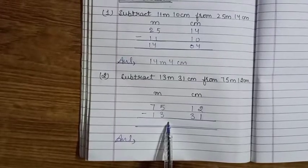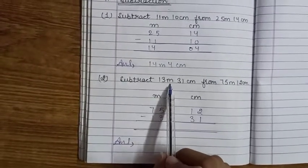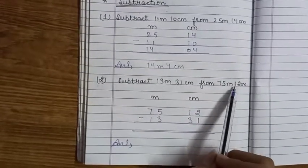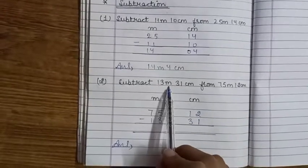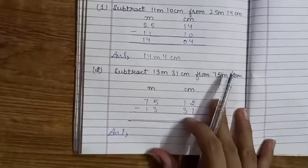Second question is subtract 13 meter 31 centimeter from 75 meter 12 centimeter. Aapko 75 meter 12 centimeter mein se 13 meter 31 centimeter ko subtract karna hai.